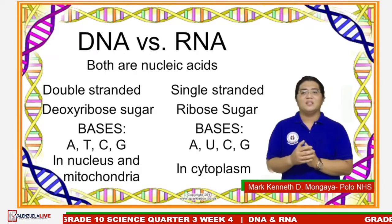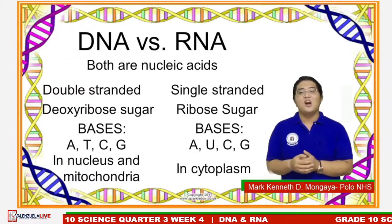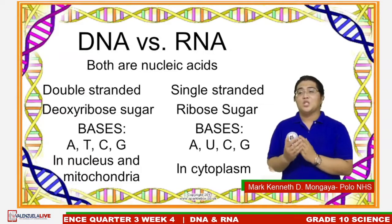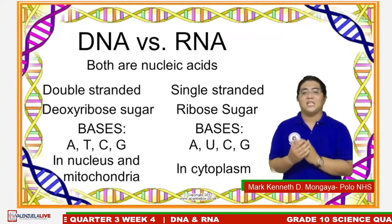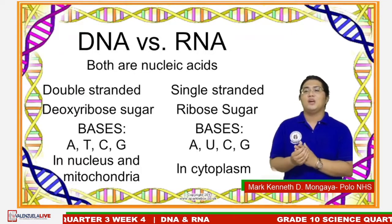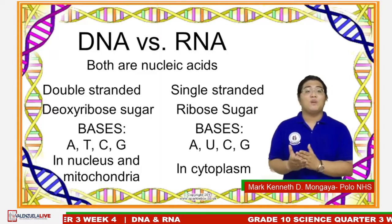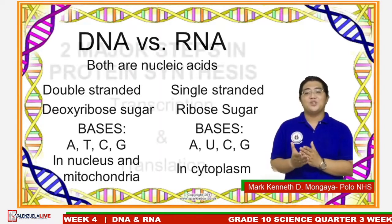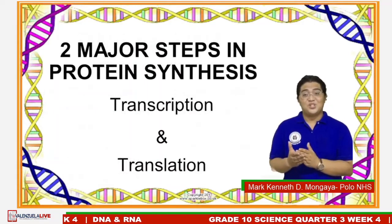DNA is located in the nucleus and mitochondria, while RNA is in the cytoplasm. Its role in protein synthesis is huge. In protein synthesis, we can look at two major steps: one is transcription, and the other is translation.